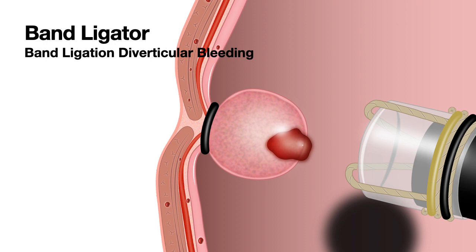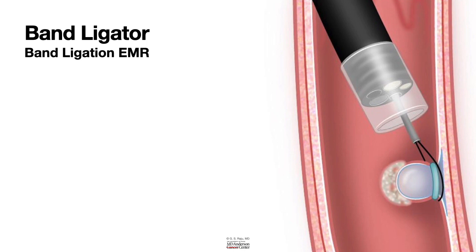Here is an example of band ligation of diverticular bleeding. It has also been used for management of Dieulafoy bleeding as well. Another application of band ligation is in resection of flat lesions. Here is an example of band ligation followed by resection of Barrett's mucosa. Band ligation EMR has also been used to manage rectal carcinoids.